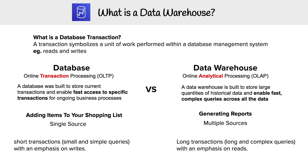Why would we want short transactions for OLTP? A database is built to store current transactions and enable fast access to specific transactions for ongoing business processes. Think of a web app that needs to be very responsive for the current user — adding an item to your shopping cart, signing up, or doing any sorts of things in a web application. Generally these are backed by a single source, like Postgres running on RDS.